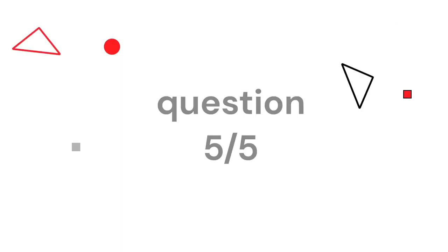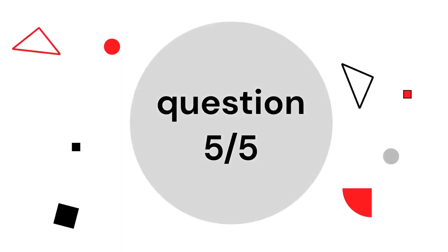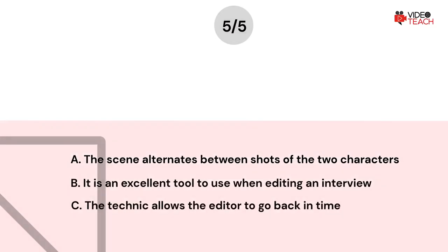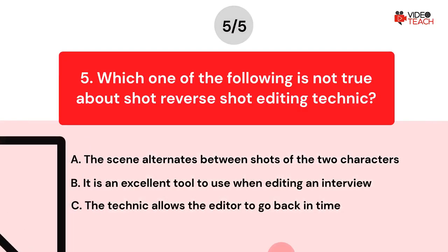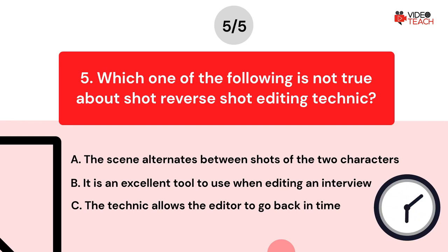Question number five. Which one of the following is not true about shot reverse shot editing technique? Option A: The scene alternates between shots of the two characters. Option B: It is an excellent tool to use when editing an interview. Option C: The technique allows the editor to go back in time. Now you have about 15 seconds to think about your answer.